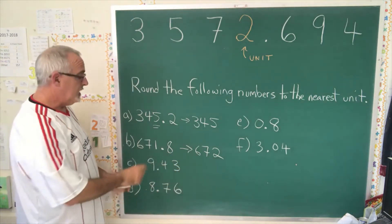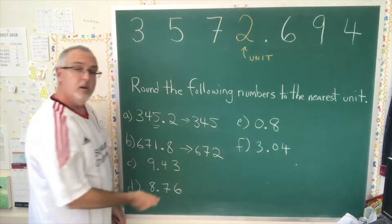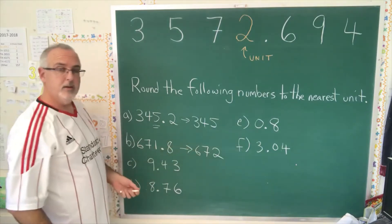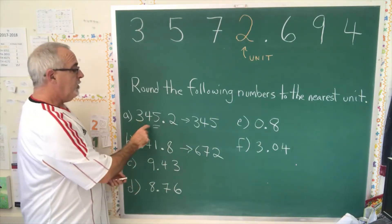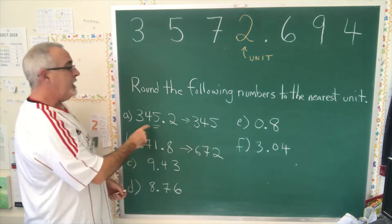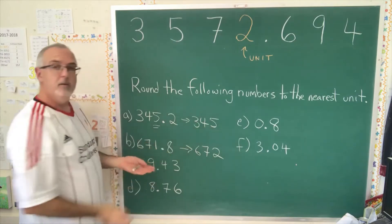The logic is 671.8 is closer to 672 than it is to 671. So we round it up to 672. 345.2 is closer to 345 than it is to 346. So we round that down to 345.